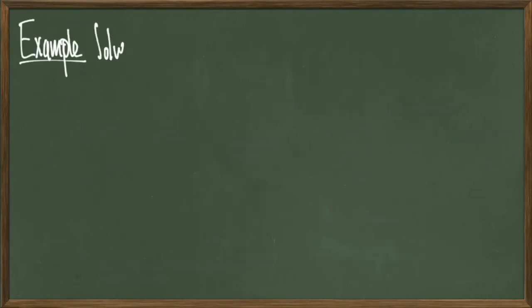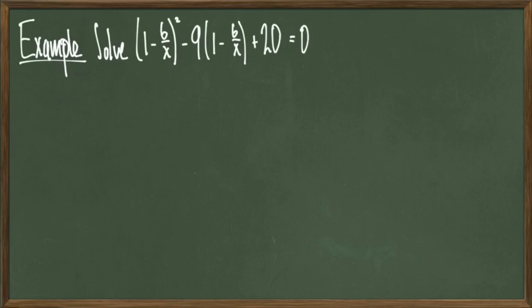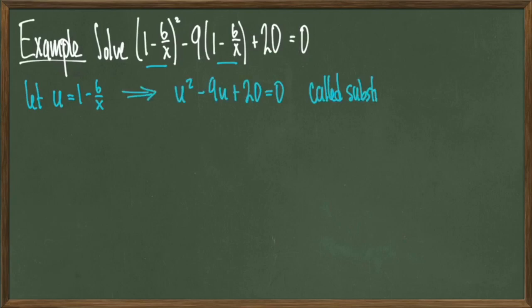So we'll finish off with a different kind of example. We're going to solve the equation quantity 1 minus 6 over x squared minus 9 times quantity 1 minus 6 over x plus 20 equals 0. So we've got the term 1 minus 6 over x showing up multiple times. So I'll make use of this trick that is known as u-substitution. I'm going to let u stand in for the value 1 minus 6 over x. Once I make this substitution, I get the revised quadratic equation u squared minus 9u plus 20 is equal to 0. Again, this is called substitution or u-substitution. Both names are pretty common, but basically what I'm doing is taking something that looks complicated and replacing it with a single letter. That way it's easier to handle.